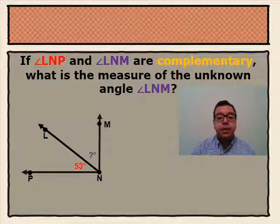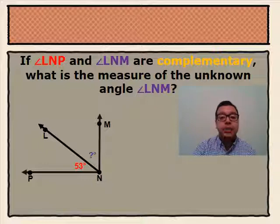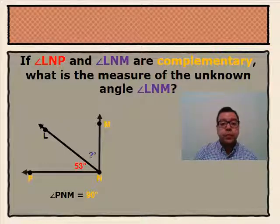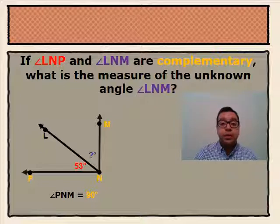If angle LNP and angle LNM are complementary, what is the measure of the unknown angle, angle LNM? Two angles are said to be complementary — that means that two adjacent angles added together will give us a 90-degree angle. So knowing that the two angles are complementary, meaning that the sum of angle LNP and angle LNM is 90 degrees, we can subtract our known angle to figure out what our unknown angle is.